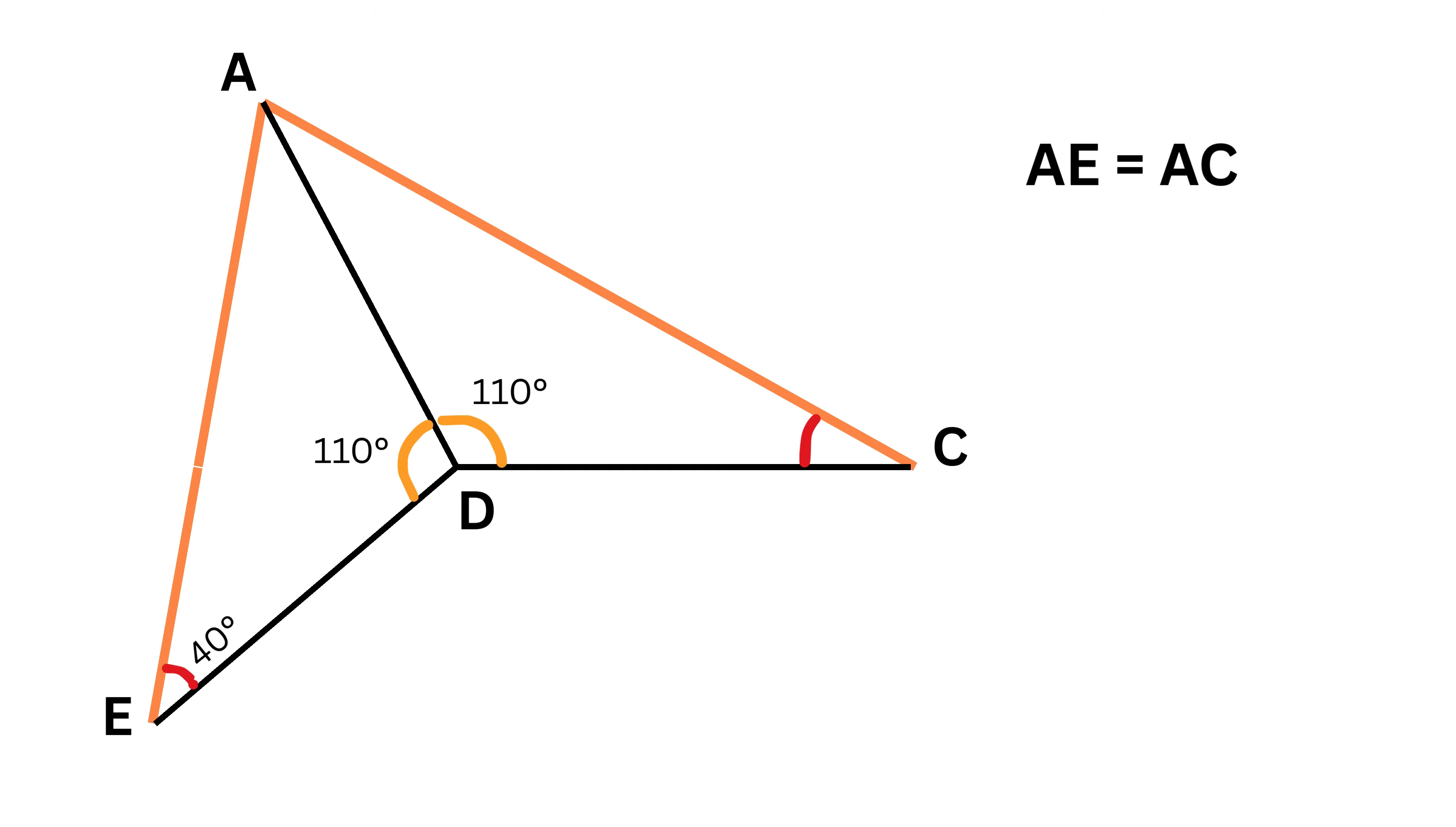Okay, so if we consider triangles ADE and ADC, both of them share a common side AD. Then this side length AE is equal to side length AC. Also, both these angles are equal.